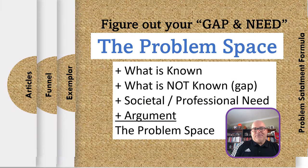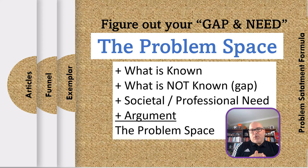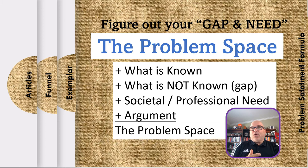I like to break this topic down into smaller parts and articulate it in a simple mathematical formula: what is known, plus what is not known, plus what is needed to be known, plus the argument — that creates the problem space.